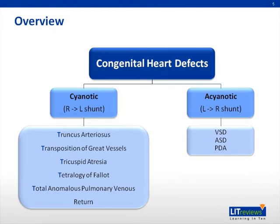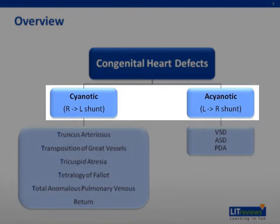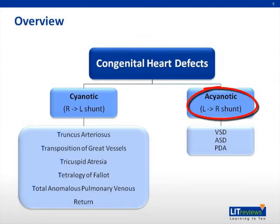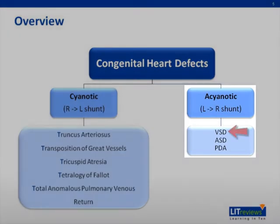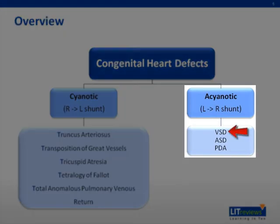Let's start off with a general overview of congenital heart defects, categorizing them into acyanotic versus cyanotic conditions. Acyanotic conditions have left-to-right shunting, causing blood to recirculate through the lungs. Cyanotic conditions, on the other hand, have right-to-left shunting, causing deoxygenated blood in the right side of the heart to bypass the lungs and go straight back into the body without picking up oxygen. VSDs fall under the acyanotic category.